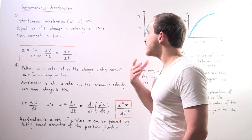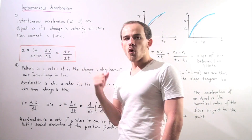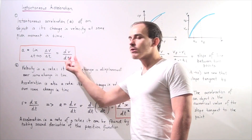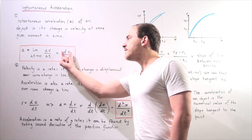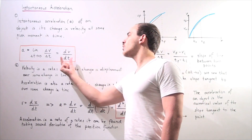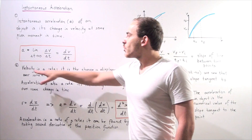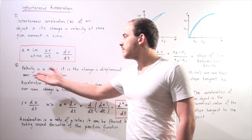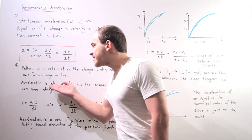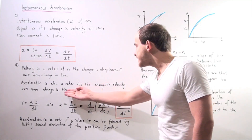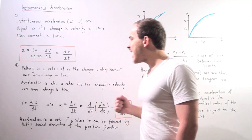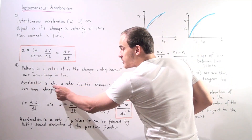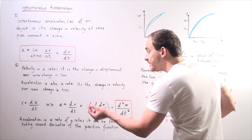In calculus form, we can represent instantaneous acceleration as the derivative of our velocity function with respect to time — our infinitely small change in velocity divided by our infinitely small change in time. Recall that velocity is a rate: the change in displacement divided by change in time. Likewise, acceleration is also a rate — the change in velocity over change in time. So since velocity is a rate and acceleration is a rate, that means acceleration is the rate of a rate.